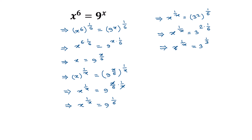Now, x to the power 1 over x is equal to 3 to the power 1 over 3. Comparing both sides, we get the value of x is equal to 3, and this is the solution of our given equation.